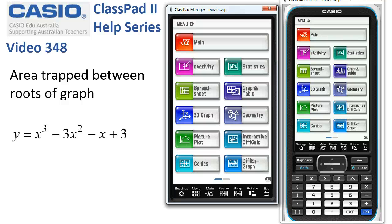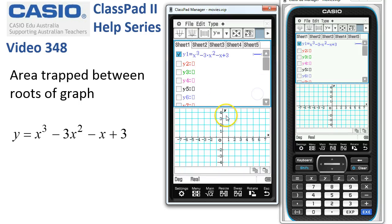Area trapped between the roots of a graph. We've got this cubic function here, so we'll head into graph and table. Just to save a bit of time, I've already entered it in here and selected it.